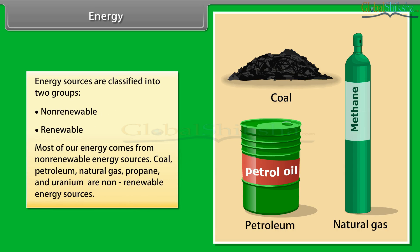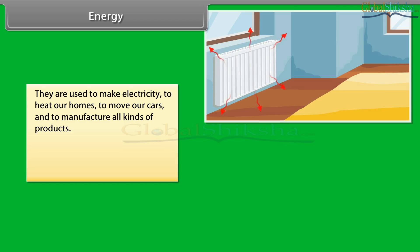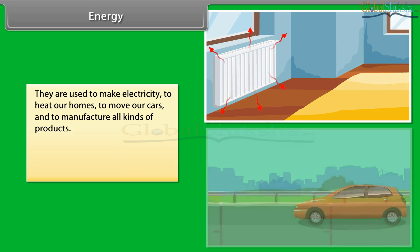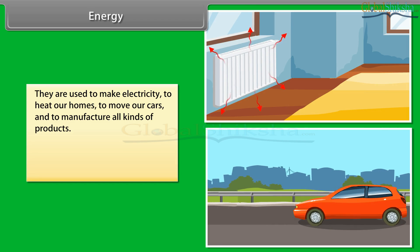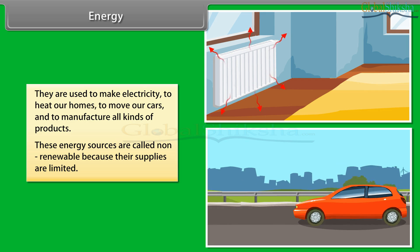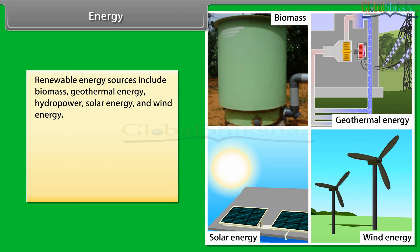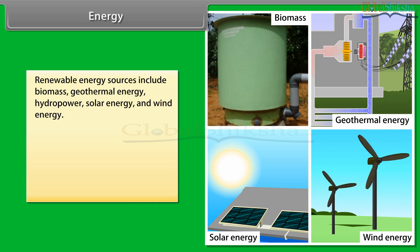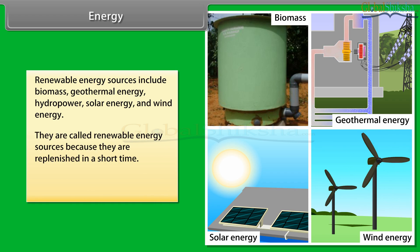Most of our energy comes from non-renewable energy sources. Coal, petroleum, natural gas, propane and uranium are non-renewable energy sources. They are used to make electricity, to heat our homes, to move our cars, and to manufacture all kinds of products. These energy sources are called non-renewable because their supplies are limited. Renewable energy sources include biomass, geothermal energy, hydropower, solar energy and wind energy. They are called renewable because they are replenished in a short time.